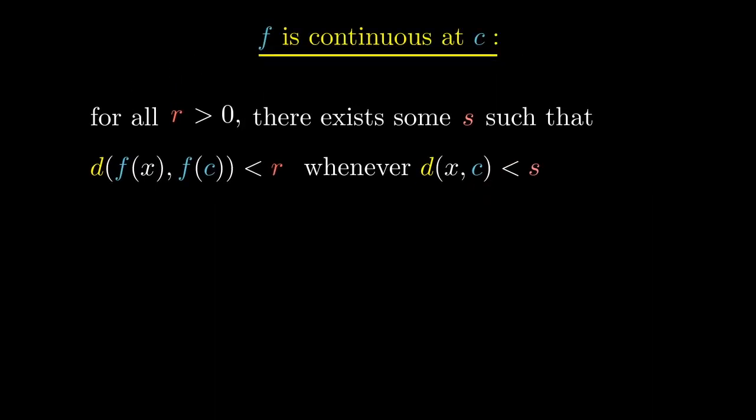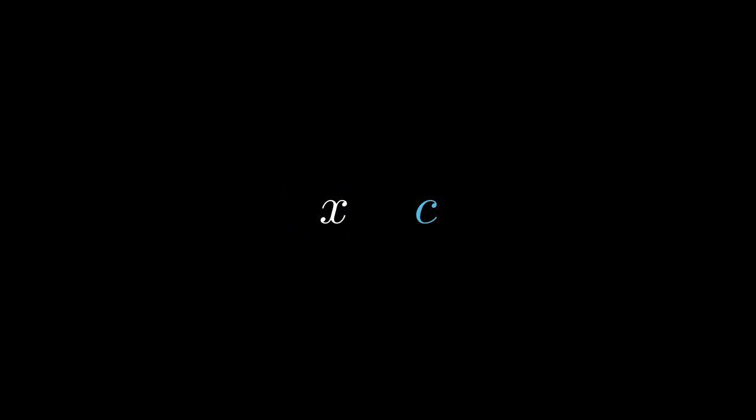It might seem like a small change, but removing the unnecessary detail in the definition actually allows us to apply our definition in many other contexts. Now that the definition only refers to the absolute distance, we can say that whenever we have some way of determining the distance between two things, we can also talk about a function being continuous. We no longer need to be able to subtract or take the absolute value — all we need is some notion of distance.